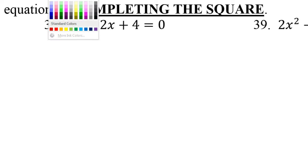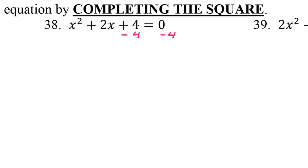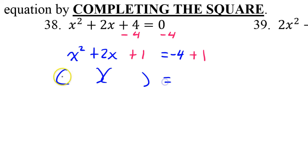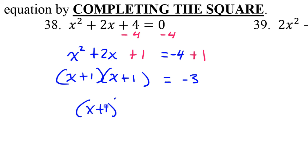Let's practice that again. This is not the number we want, so I will start by subtracting 4 from both sides. That's going to leave me with x squared plus 2x, leave a space, is equal to negative 4. Now it's time to complete the square — it's all about half the middle squared. Half of 2 is 1, and 1 squared is 1. So I need to put a 1 here, and don't forget, you have to put it on both sides. This will now factor as the same thing twice: x plus 1 times x plus 1. Over here, this makes negative 3.